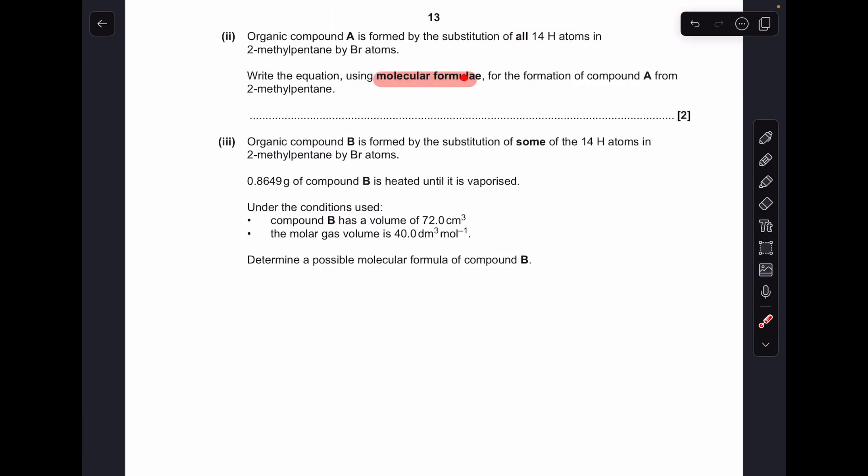Moving on to the next part, we've got to use molecular formula for the equation. So there's the reaction there, and the thing I always tell my students is every substitution in radical substitution requires a mole of halogen and it also makes a mole of a hydrogen halide. So if we're substituting all 14 hydrogens, we need 14 moles of bromine in this case, and we're going to make 14 moles of hydrogen bromide.